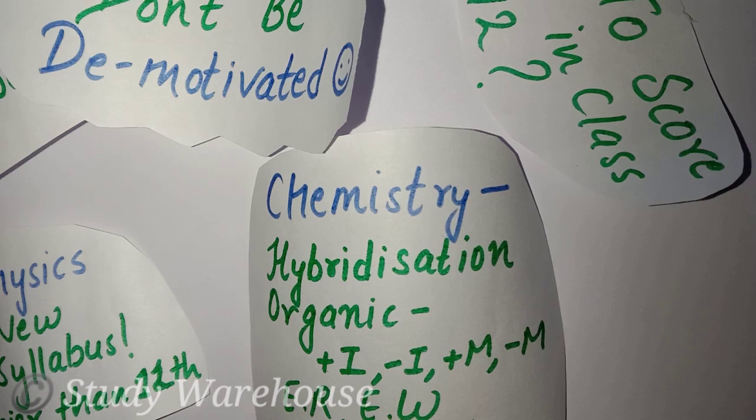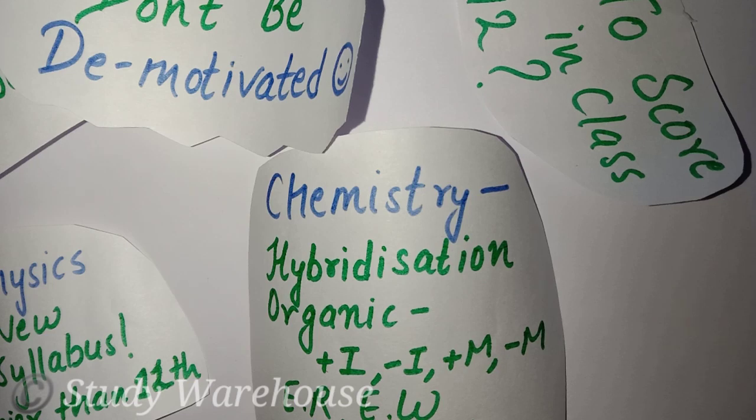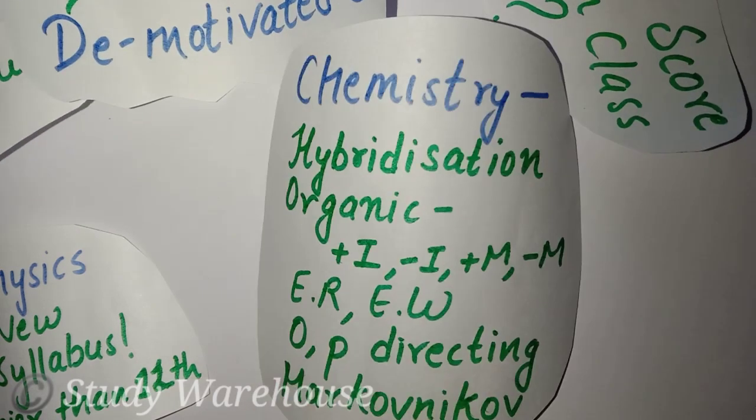These two chapters are very important and hybridization is used in them, so you must practice it. Then organic chemistry - in organic chemistry, plus I effect, minus I, plus M and minus M, these are certain effects and properties which are used in Class 12th also. In organic chemistry, if you study only these topics, it would be very beneficial in Class 12th.